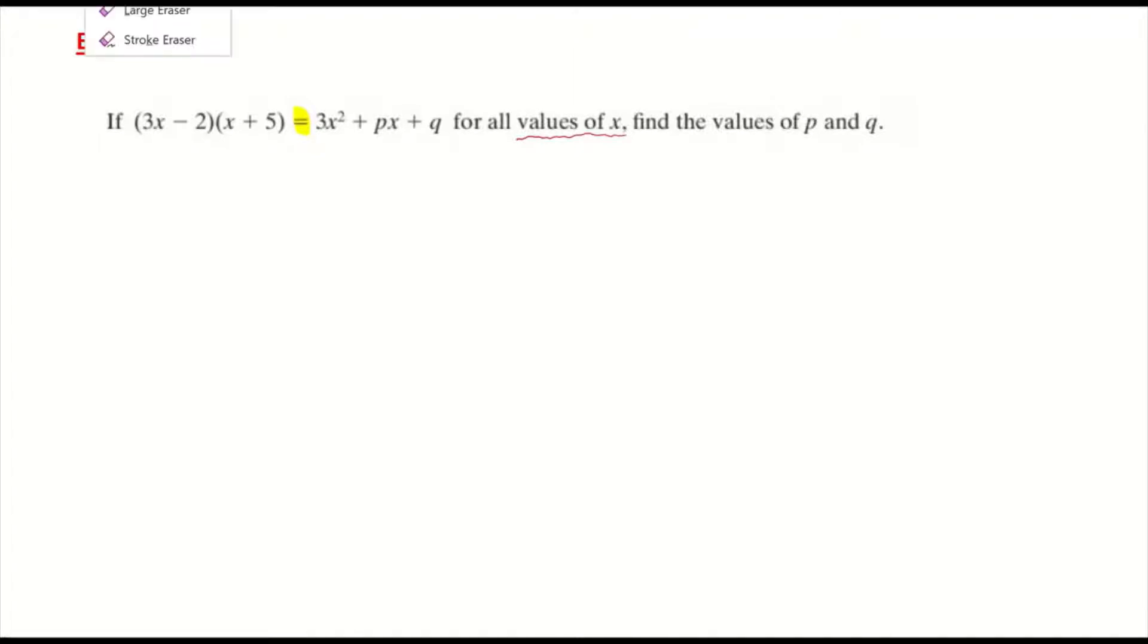First thing I would do is ignore the right-hand side of the equals because there's nothing I can do to this - it's already expanded. So what I'm going to do here on the left-hand side is multiply out these brackets. See my two brackets here? I'm going to multiply those out.